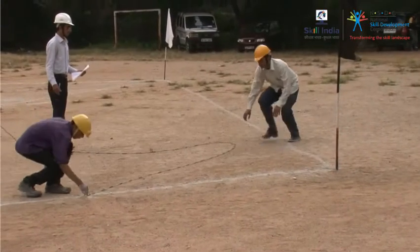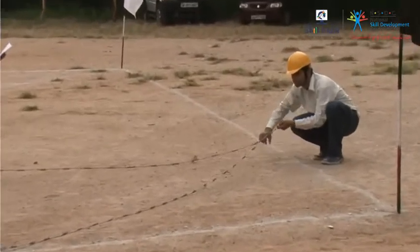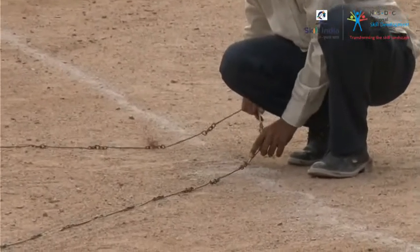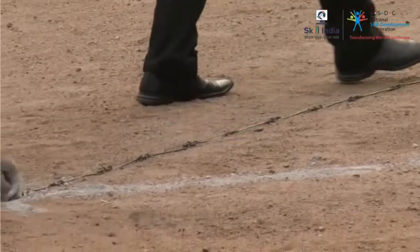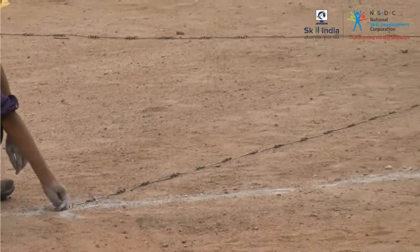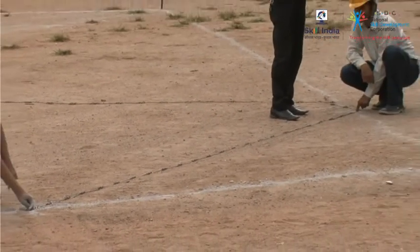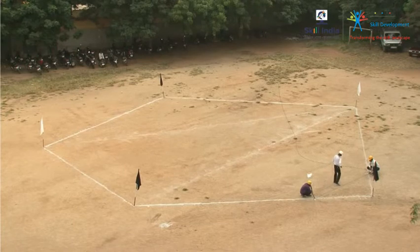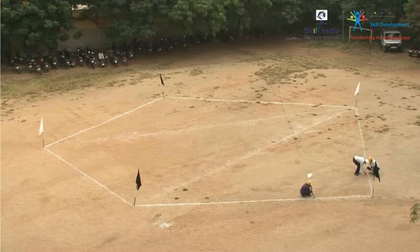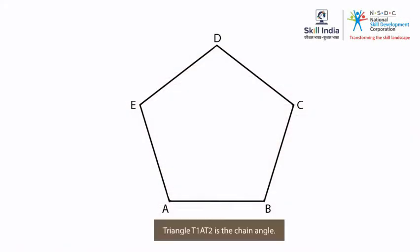Use a tape or chain to measure the distance between T1 and T2. Now, after computations, the determined angle T1-T2 is said to be the chain angle.